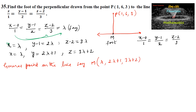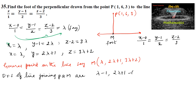Now the direction ratios of the line joining P and M are: λ − 1, (2λ + 1) − 6, and (3λ + 2) − 3, that is λ − 1, 2λ − 5, and 3λ − 1.